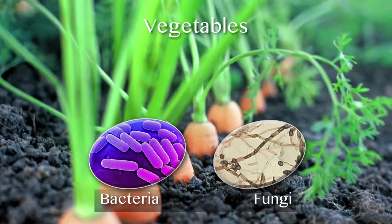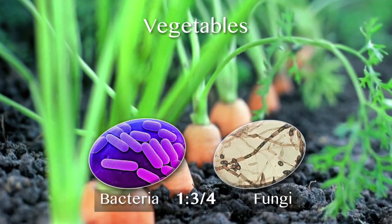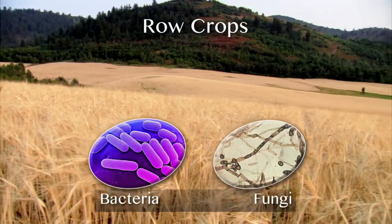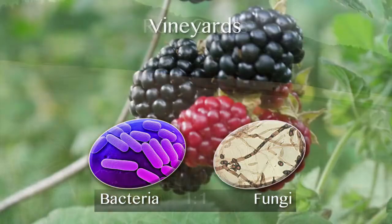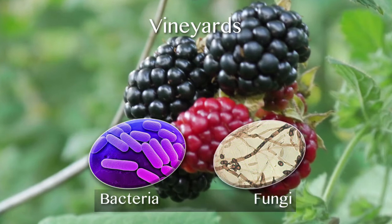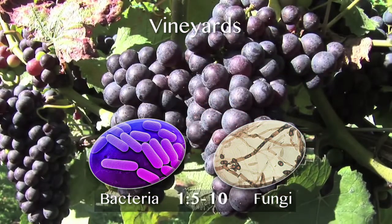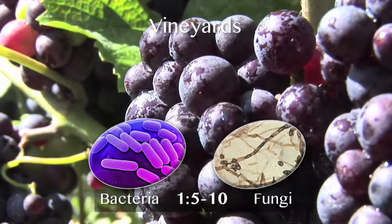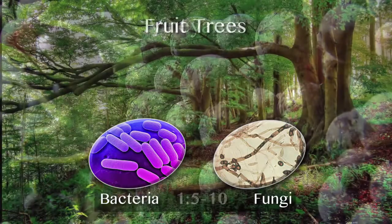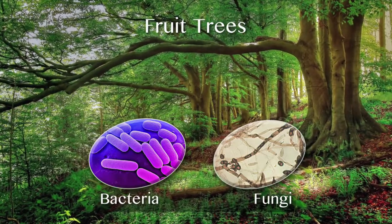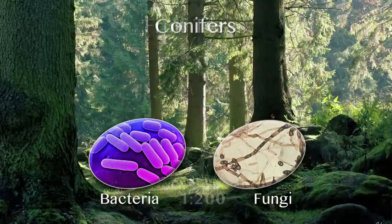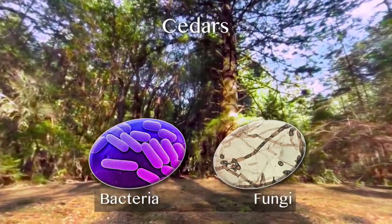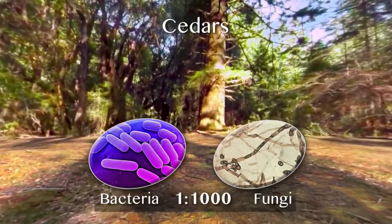Vegetables, for every bacteria there's almost one fungi. However, in our row crops, the proper balance of bacteria to fungi is a one-to-one ratio. When we get into woody plants such as vines — whether grapes, blackberries, or blueberries — the ratio switches to being fungally dominant, meaning five to ten times more fungi than bacteria. When we get into fruit trees and deciduous trees, they're as high as 200 fungi to one bacteria. In conifers, it's as high as 500 fungi to one bacteria. And in the old growth forests and the cedars, it's as high as a thousand fungi to one bacteria.